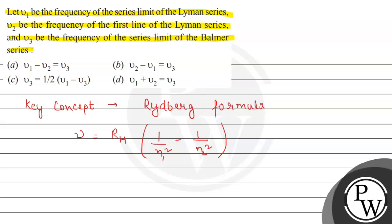Different lines appear in different series, which were named as Lyman, Balmer, Paschen, Brackett, and Pfund series.